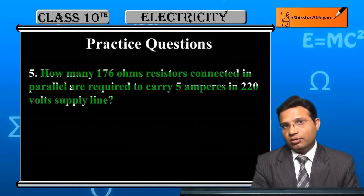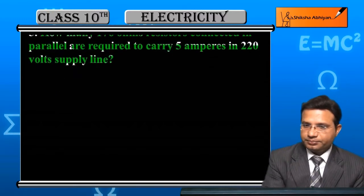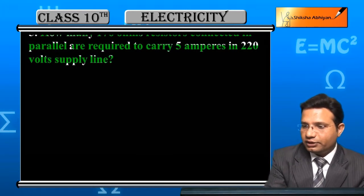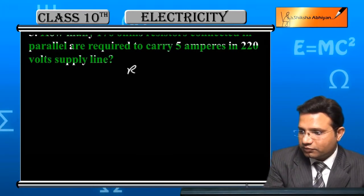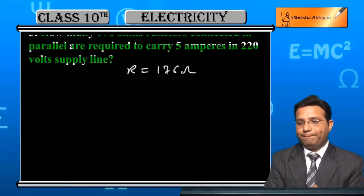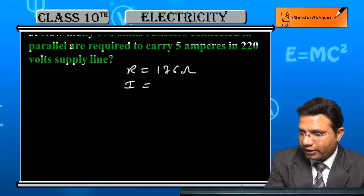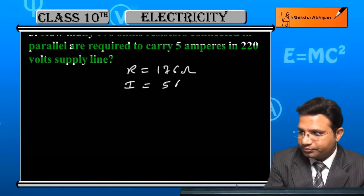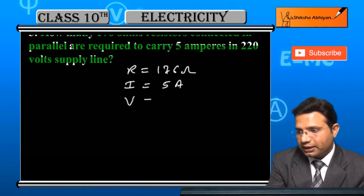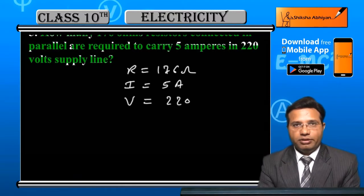There is a higher level order thinking question. First of all, we will write the given values. So, resistance of the resistor is given 176 ohm. Current drawn is 5 ampere. Potential difference of the supply line is 220 volt.